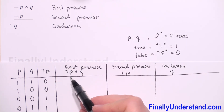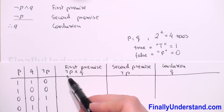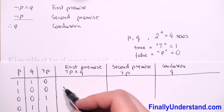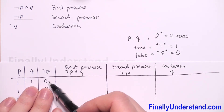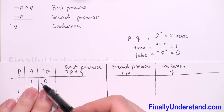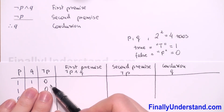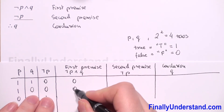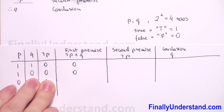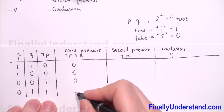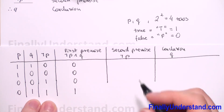For the first premise, as I said, we have a conjunction. A conjunction is true only when all simple statements are true, so not-p and q must both be true. Let's see: row 1 — not-p is 1 and q is 0, so false; row 2 — 0 and 1, false; row 3 — 0 and 1, false; row 4 — 1 and 1, so this is true.